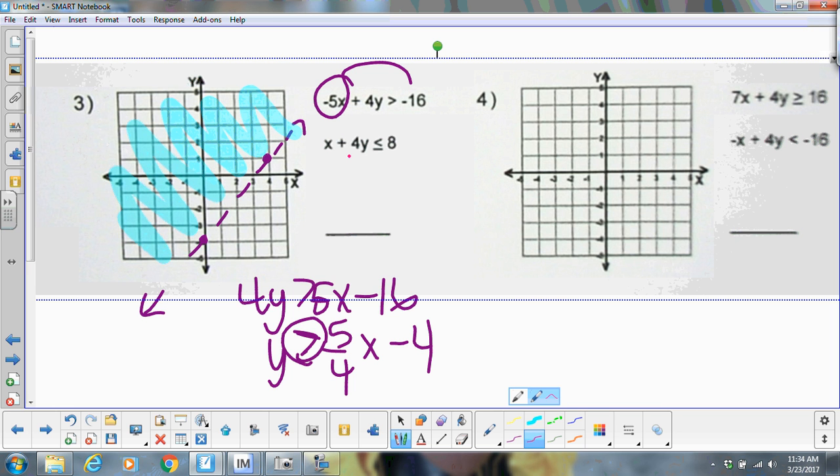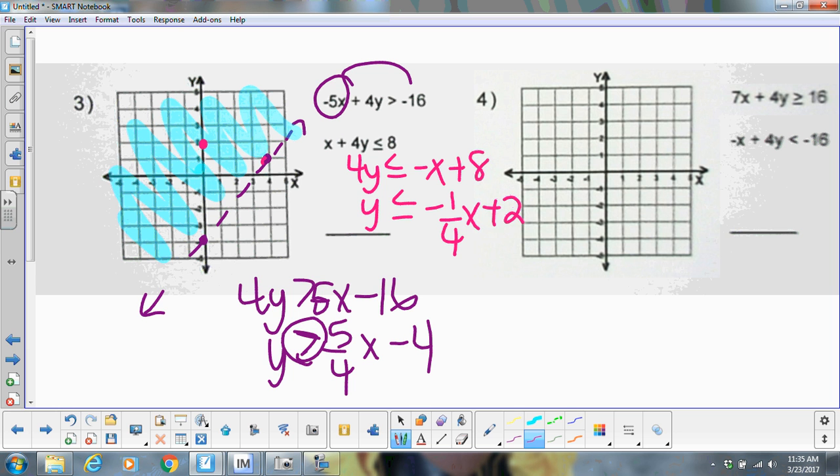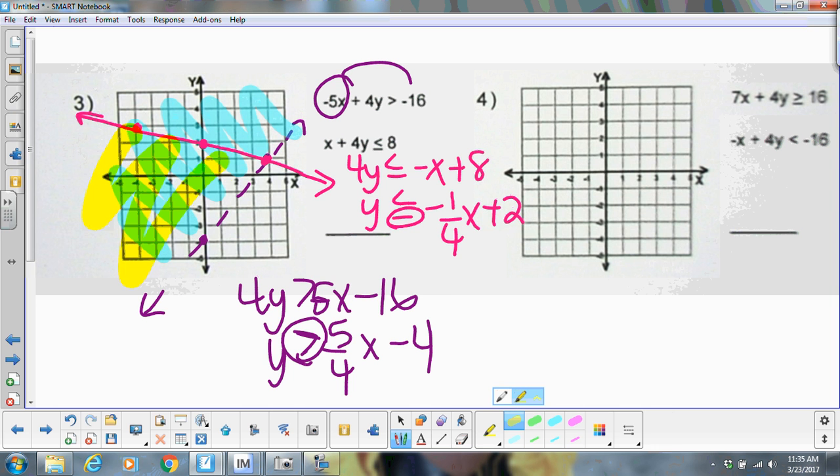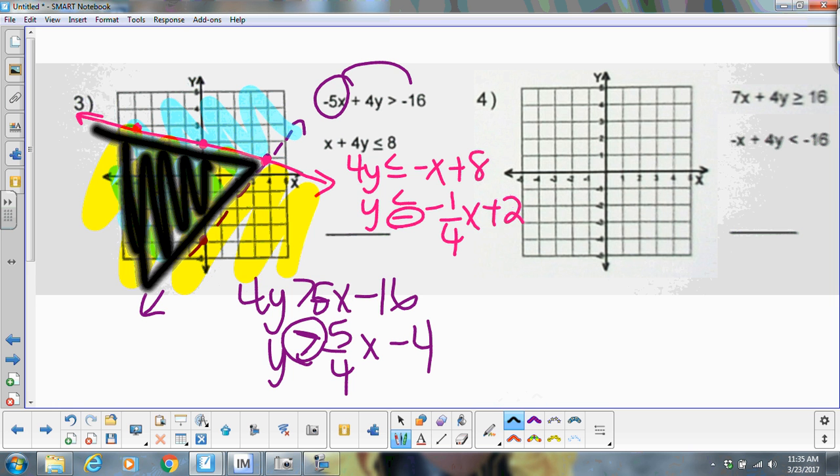Second one, when you rearrange, it's going to become y is less than or equal to negative one-fourth x plus 2. So I would start at positive 2, and I would go down one and right four, up one and left four. It has the line underneath it, so it's going to be a solid line. And it is less than, so I would technically shade below. And then you will see that the two overlap in this little area right here, so you need to make sure this part is darker than any other.